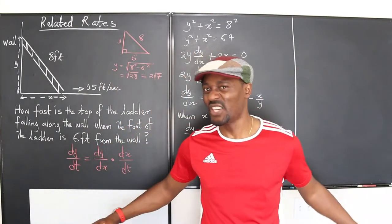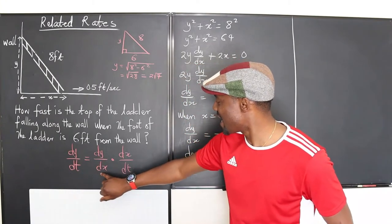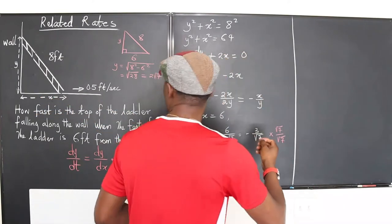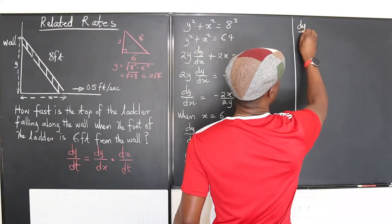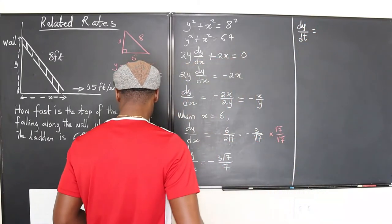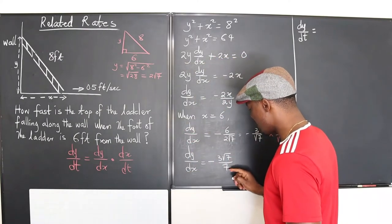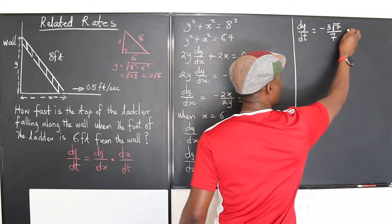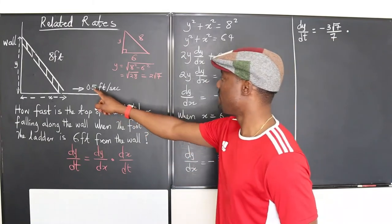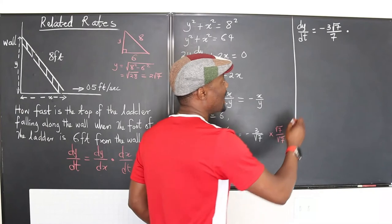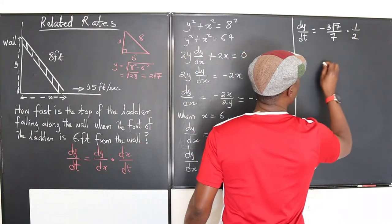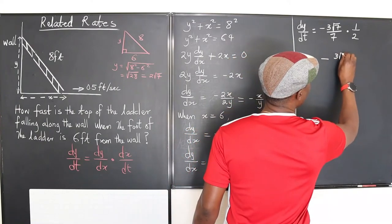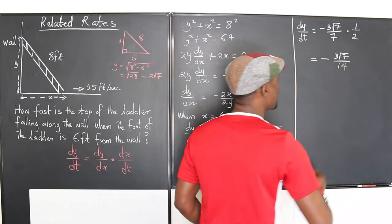Let's finish this. dy/dt is dy/dx times dx/dt. dx/dt is already given—it's the rate of change of x. Now we can do this and say that dy/dt equals dy/dx, which is now negative 3√7 over 7, multiplied by 0.5. Well, 0.5 can be written as 1/2, so I'm just going to write it as 1 over 2. This equals negative 3√7 over 14.